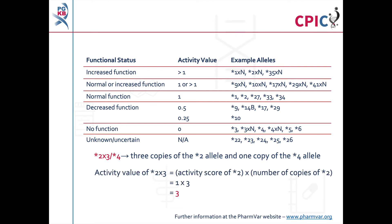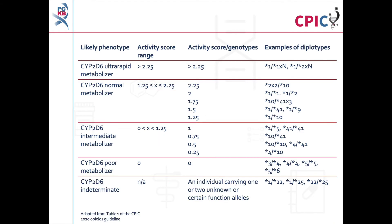In this case, the activity score of star 2 X3 is 1 multiplied by 3, which equals 3. Further information about CYP2D6 alleles can be found at the PharmVar website. The activity values of a patient's CYP2D6 alleles can be added together to give a total CYP2D6 activity score, which is then used to assign a CYP2D6 metabolizer phenotype. Note that genetic tests from different laboratories may not use this scheme. The guideline therefore advises that a patient's CYP2D6 diplotype is noted and the activity score calculated before making clinical decisions.